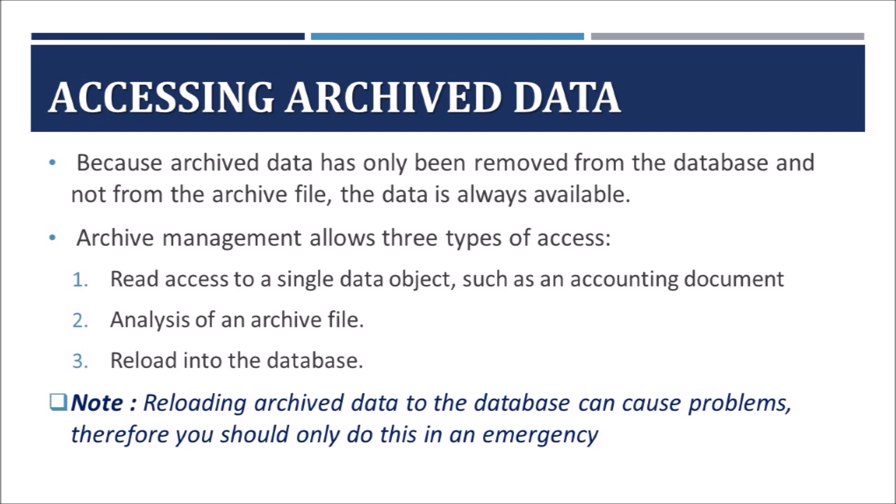The next important feature is accessing archive data. As part of archiving, we write data to archive files and delete it from the database — but we can still access and read the data from archive files. This is done with the help of archive management, which provides functions to read the data from archive files sequentially or as a single object. It also facilitates reloading the data back to the database. However, reloading archive data to the database can cause problems and is not recommended, because many changes may have happened to the database before reloading. It should be done only in emergency situations.